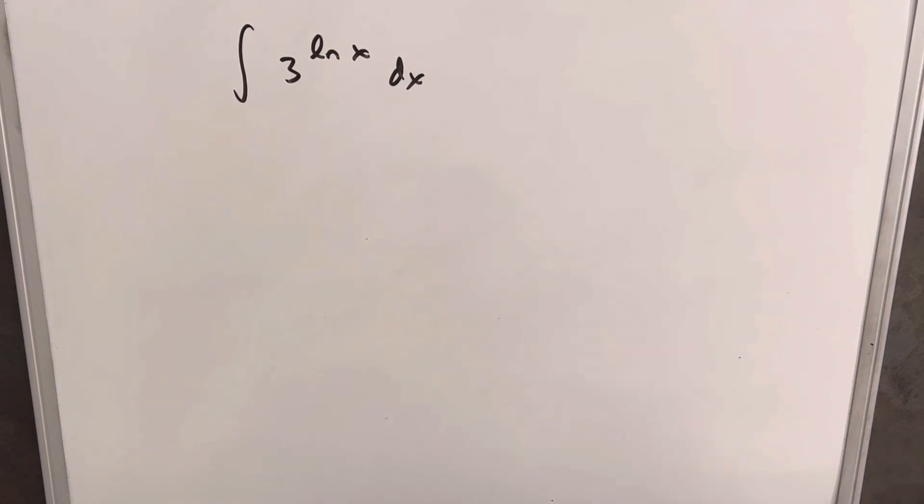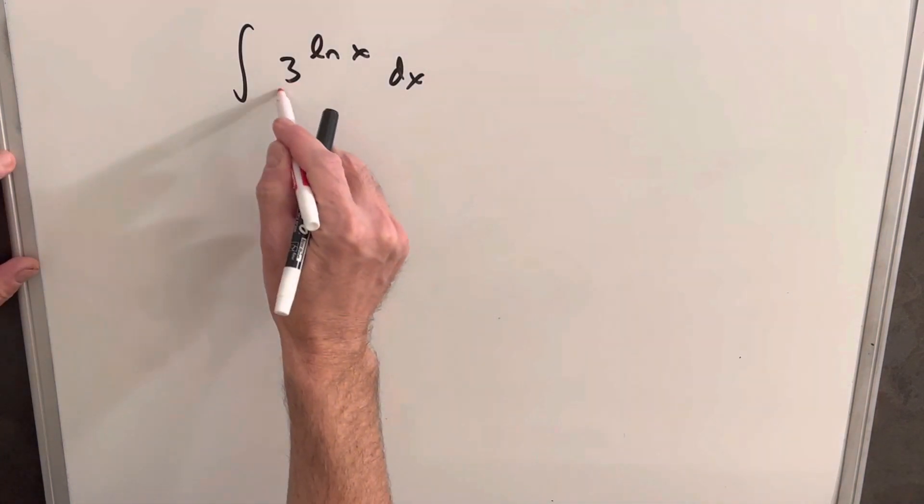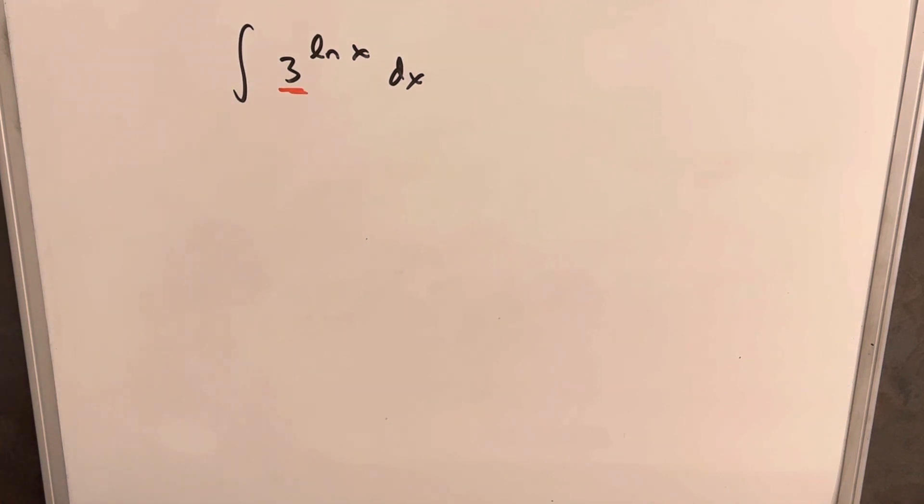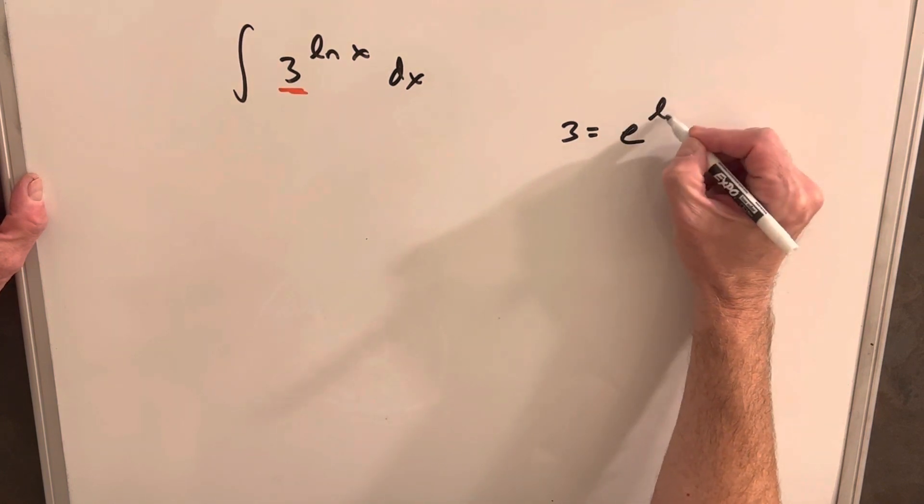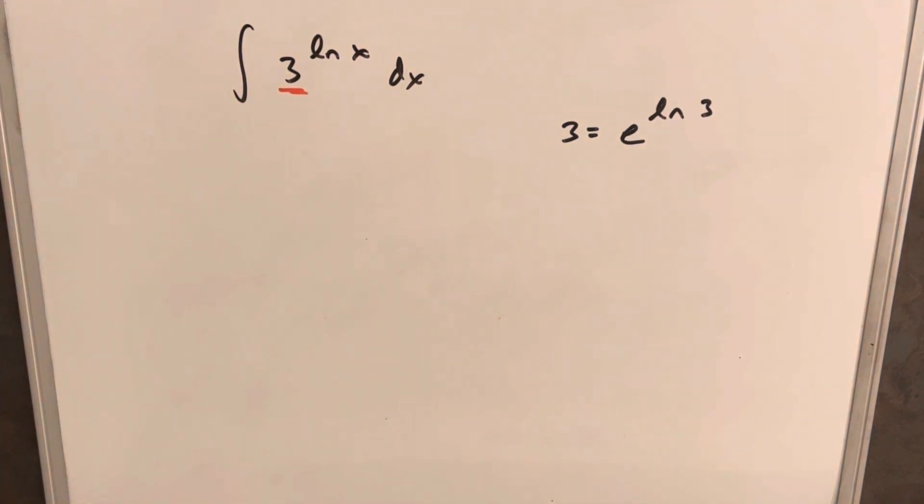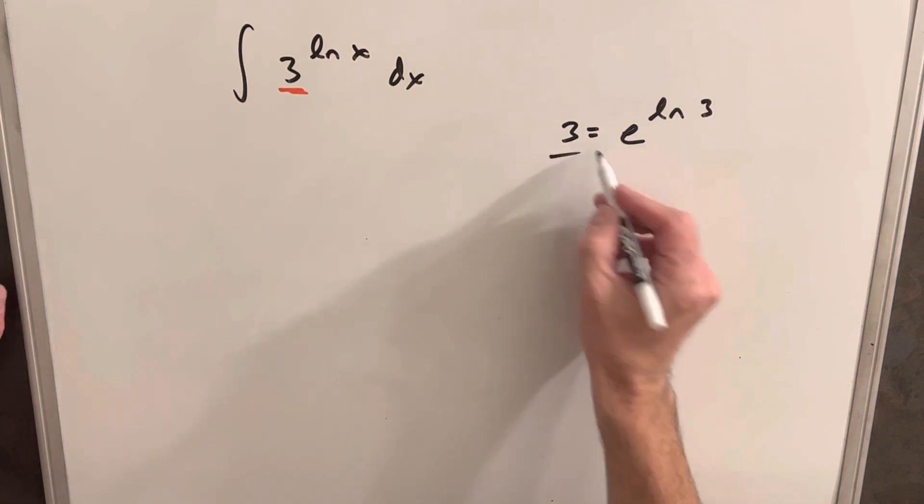Right off the bat, the thing we want to address first is we don't want 3 as a base, we'd like e as a base. So we can do this manipulation where we can say that 3 is the same thing as e to the ln 3. And you can do that with any constant value.